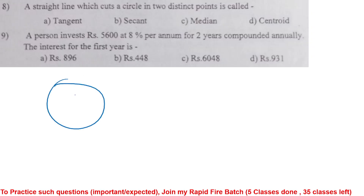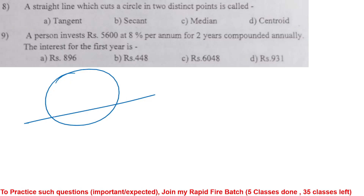A line which cuts a circle in two distinct points — Option B is correct. That is a secant.